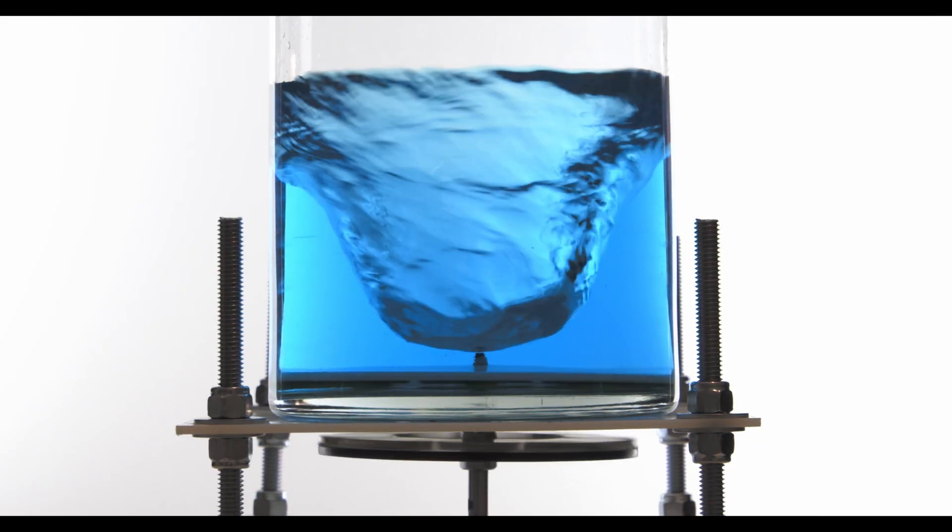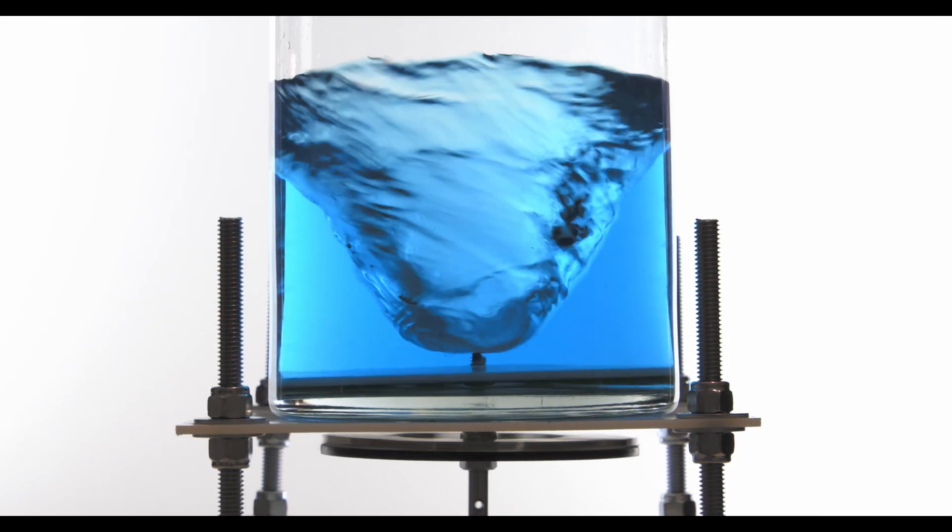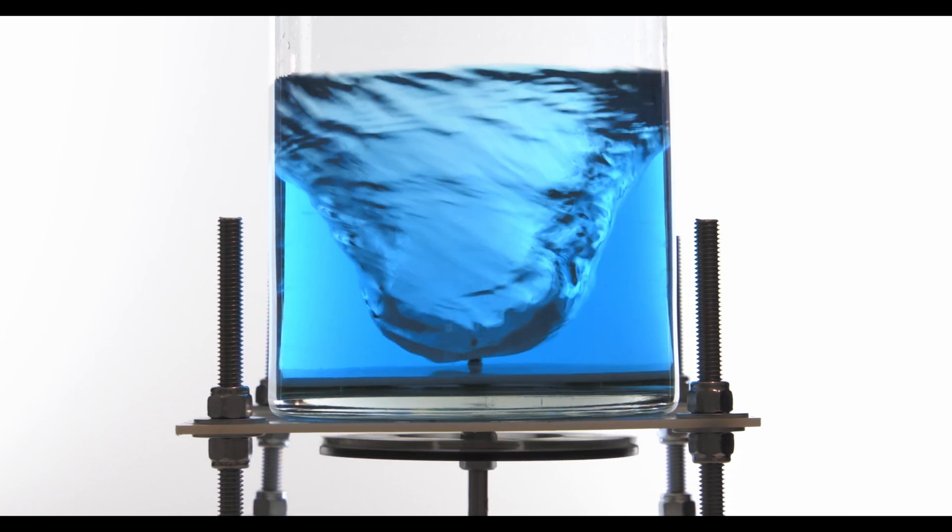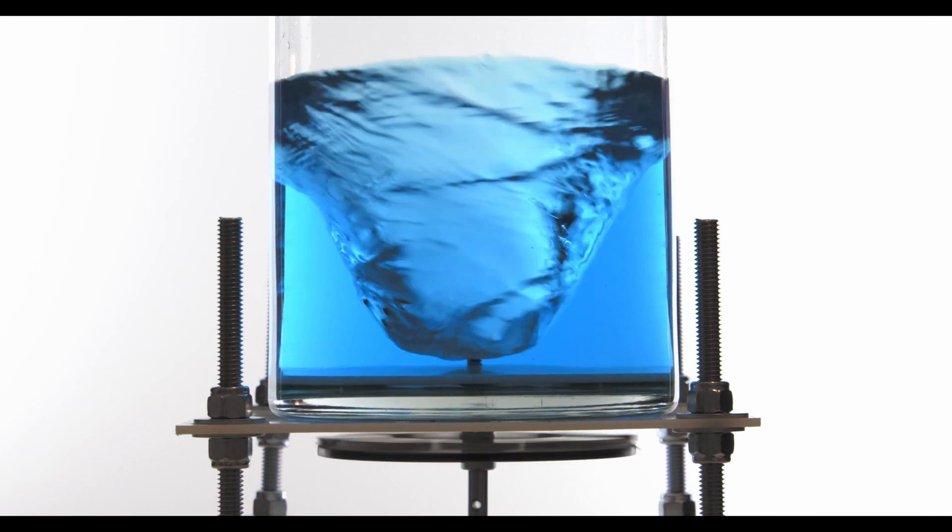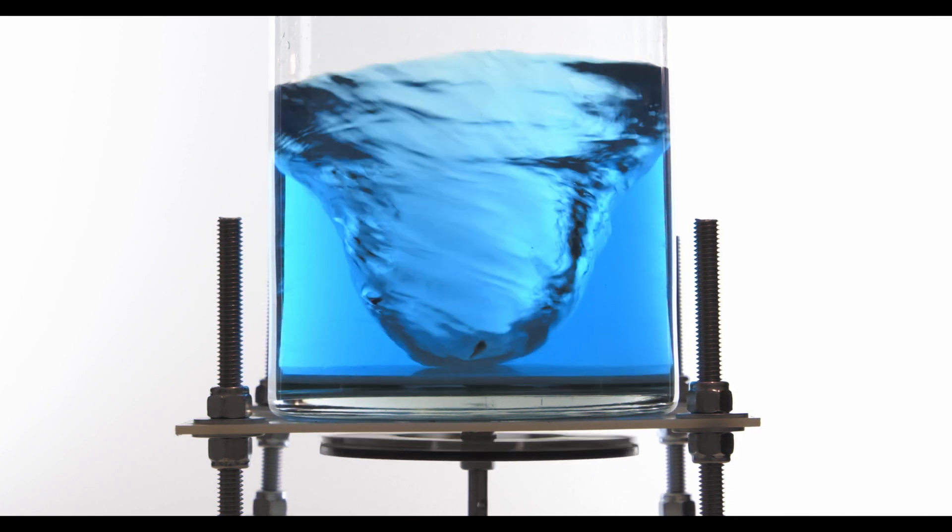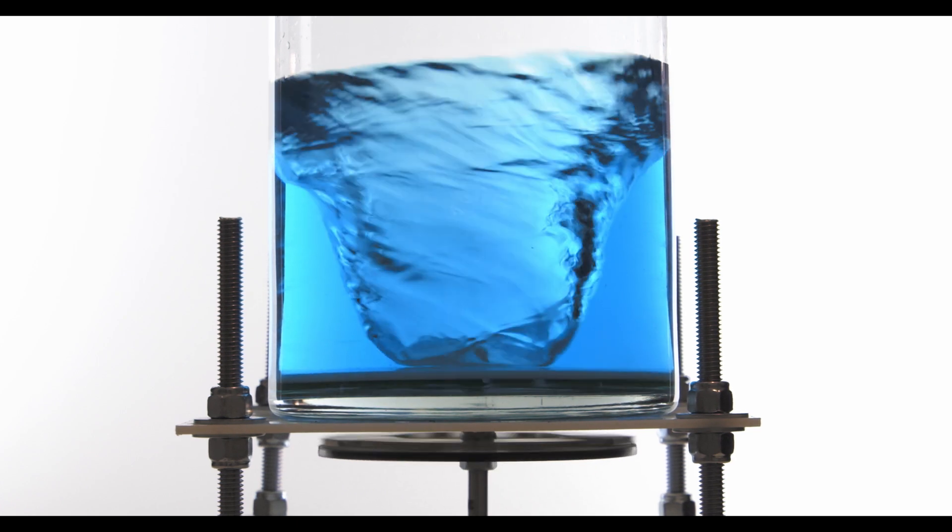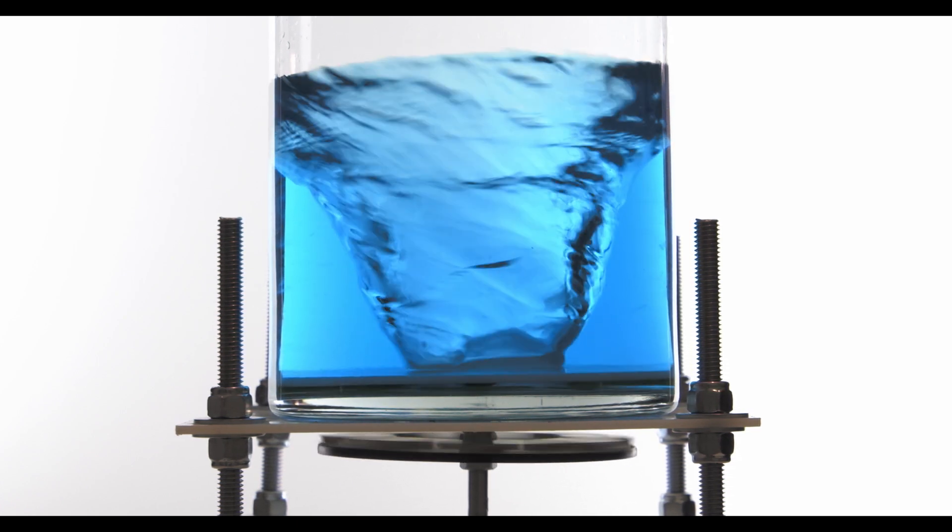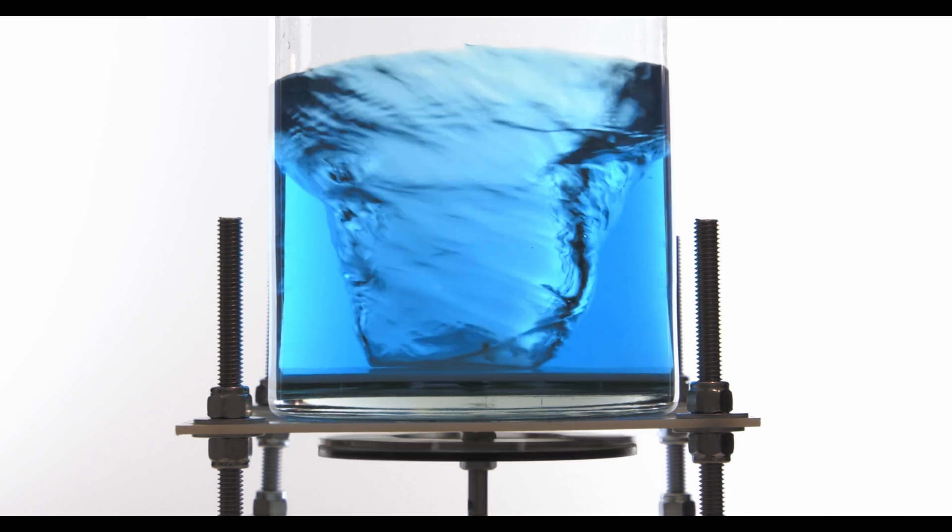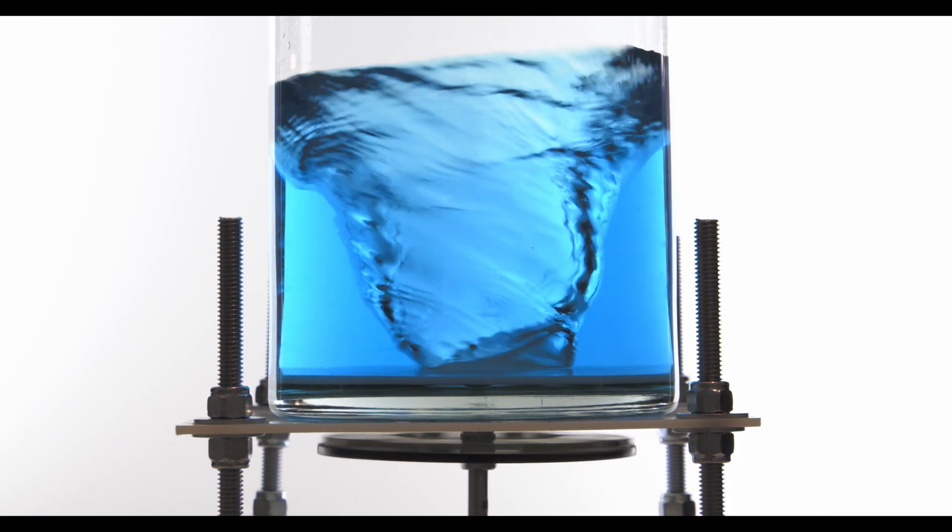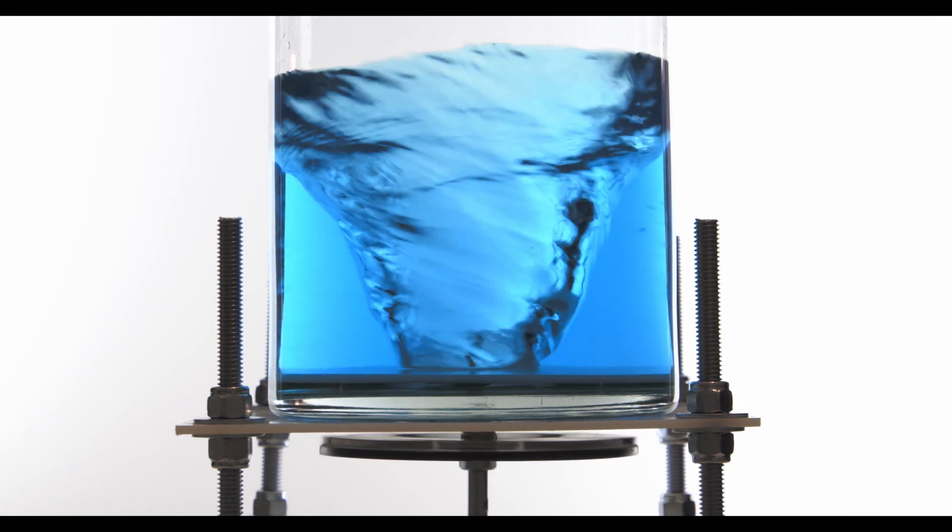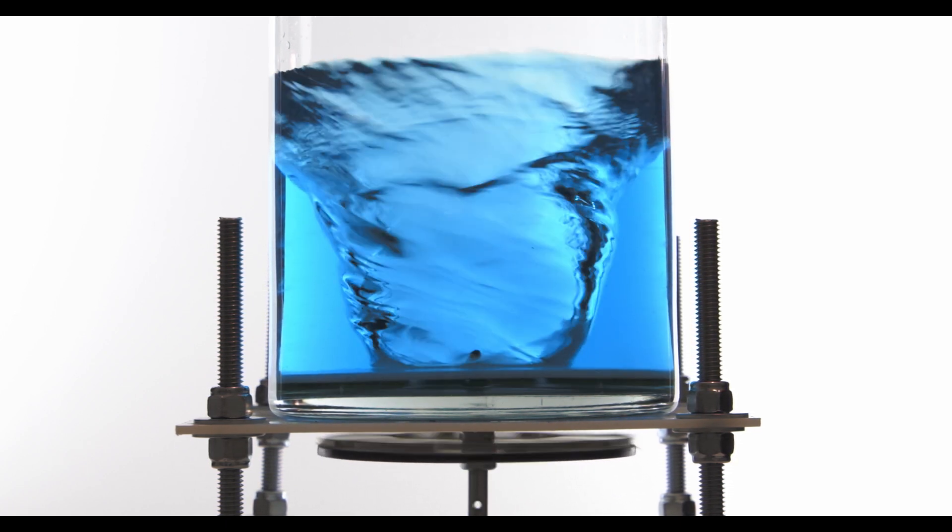Two of the most important parameters that you can change are the initial height of the water and the angular velocity of the plate. You can of course use different containers with different diameters, but here I only have this 15cm one. The initial water height and the angular velocity of the plate together form a two-dimensional parameter space. We probe different points in this parameter space, and we'll see what type of polygons we get.